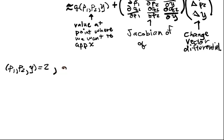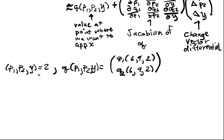Well, at this point, Q of P1, P2, Y is equal to Q1 of 6, 9, 2. So I'm sorry, I actually wanted this point to be, the whole point is that this point is 6, 9, 2.